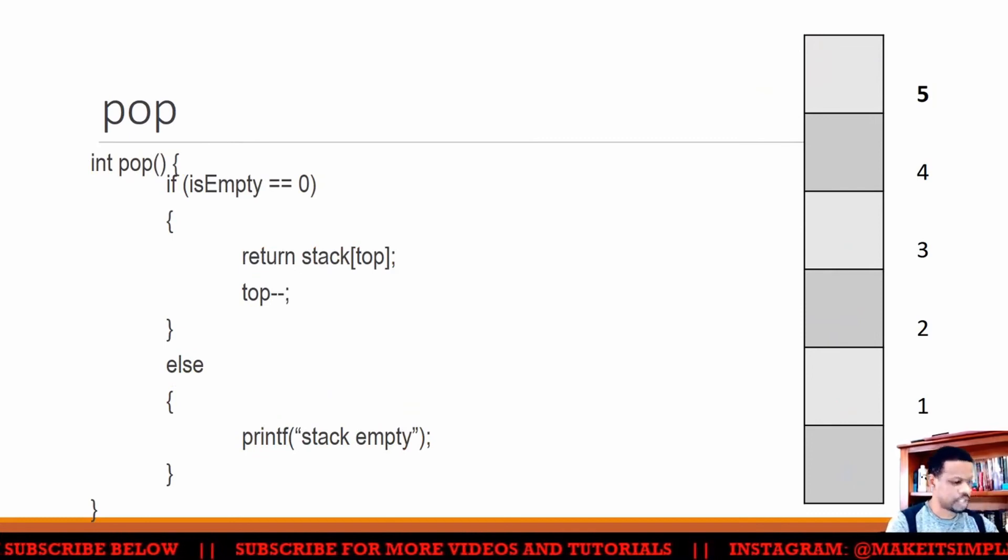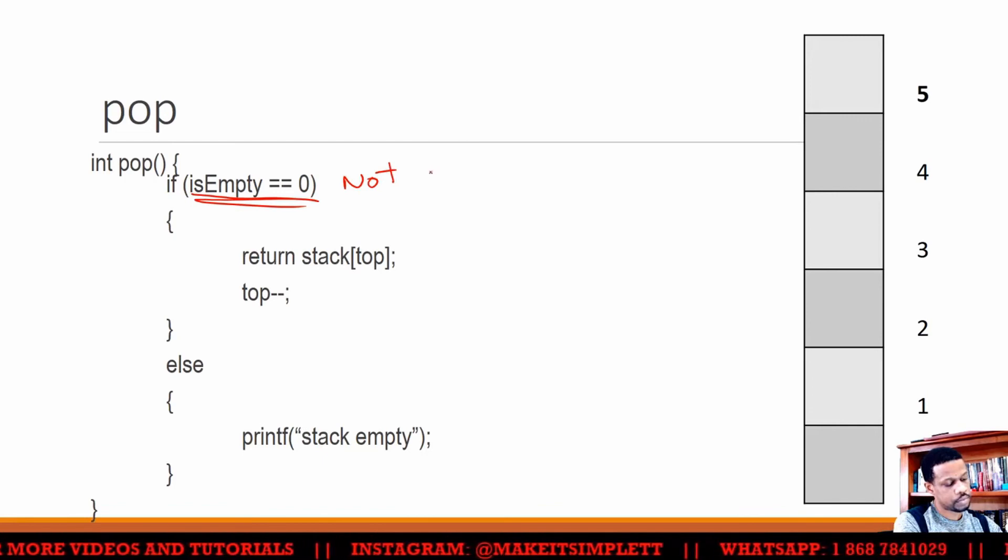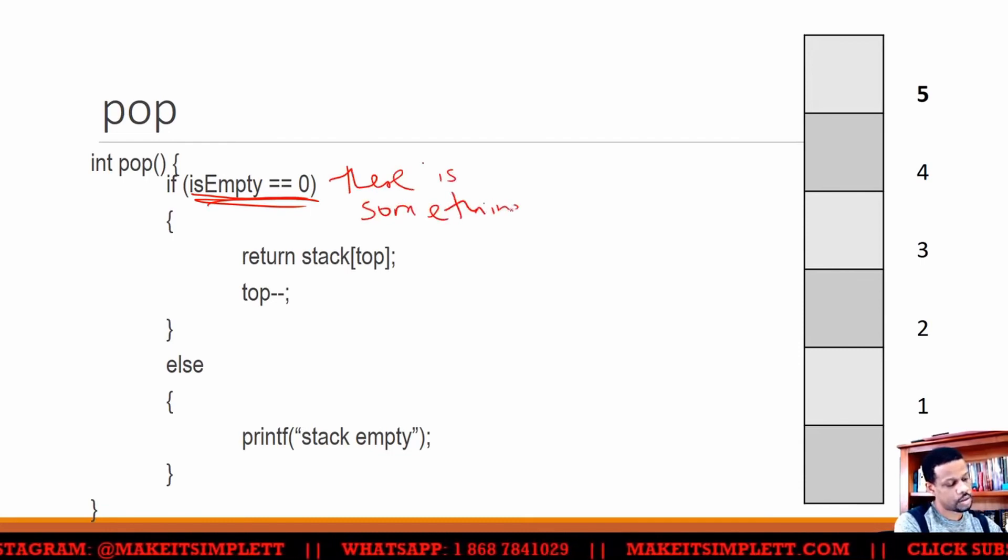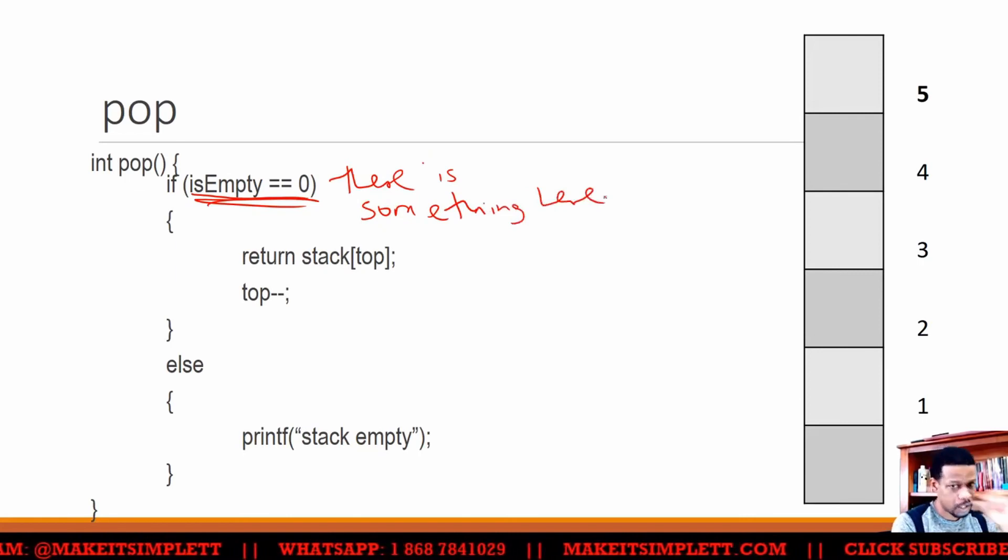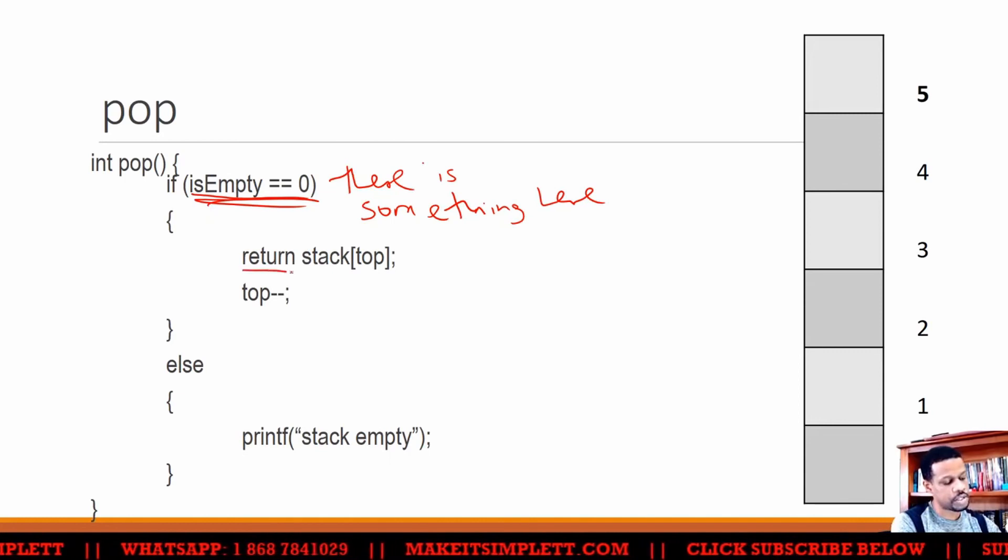A pop now will be checking to see if is empty is zero, that means it is not empty. If empty returns zero, that means it's saying there is something here. So what you're going to do is you're going to return whatever is at the top.